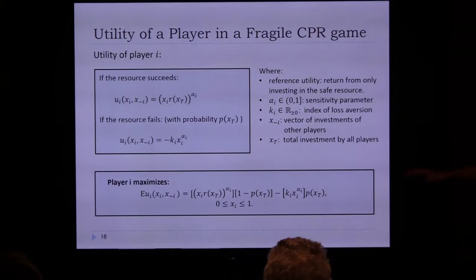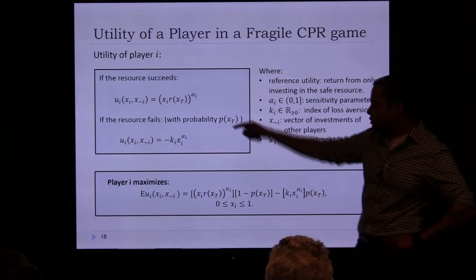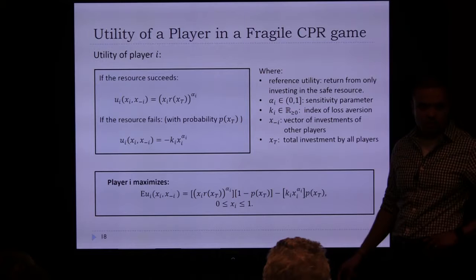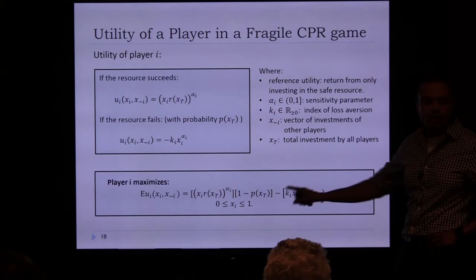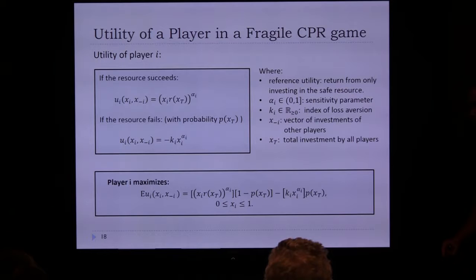In this work we have not yet considered probability skewing — only value function modifications. Taking the expected value: the gain scenario occurs with probability 1 minus P(x_T), and the loss scenario occurs with probability P(x_T). Player i chooses their investment x_i to maximize this utility function.